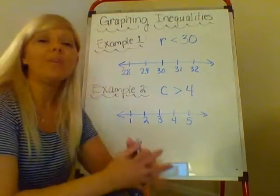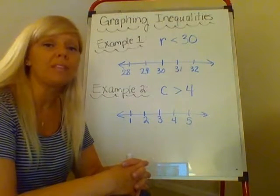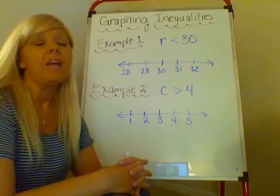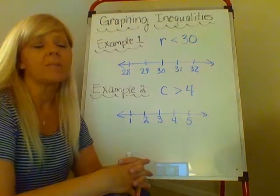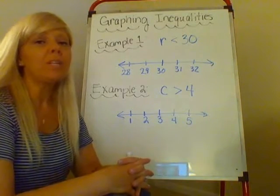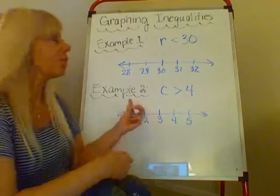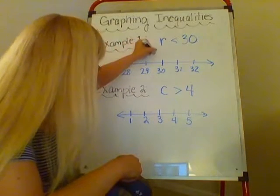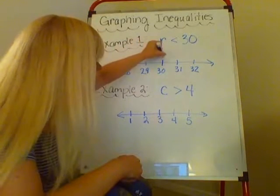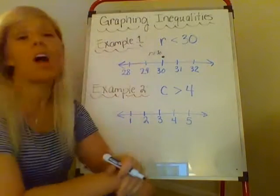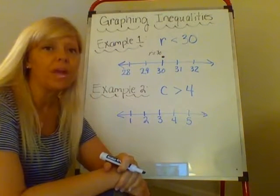So when I graph this, what I'm going to do is I'm actually going to place a dot on 30. This is going to be an open dot, an open circle. If I wanted to say r is 30, r equals 30, I would place a solid dot right there because that's r is 30.